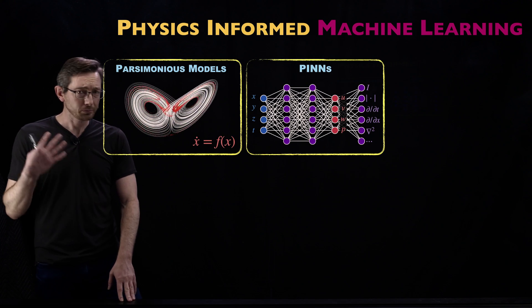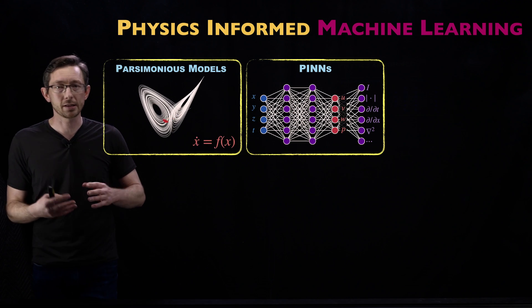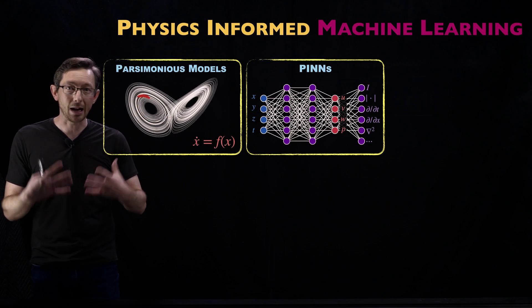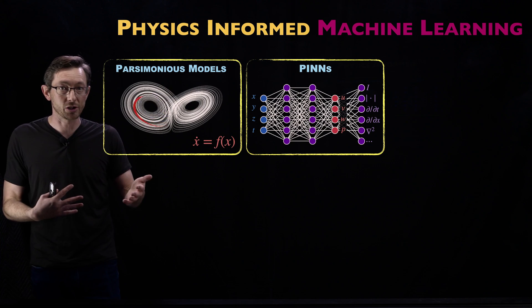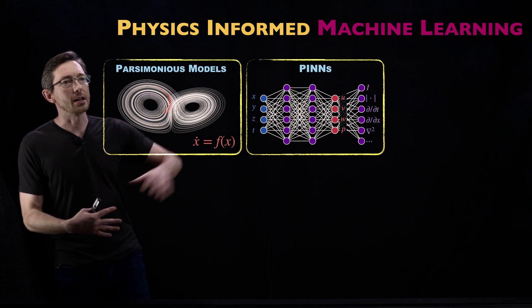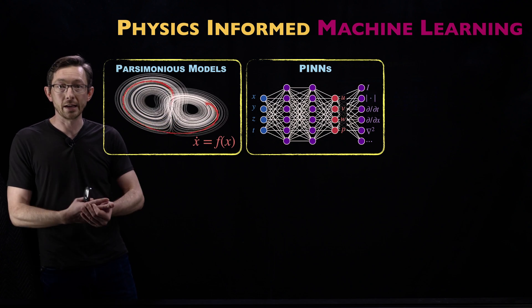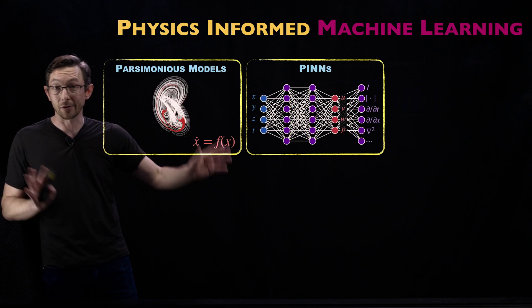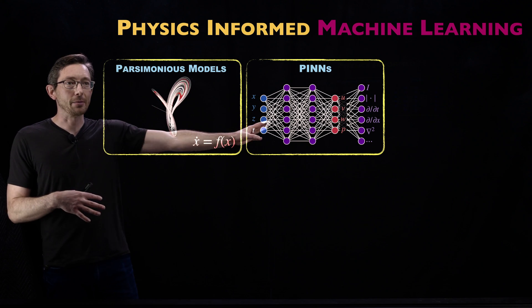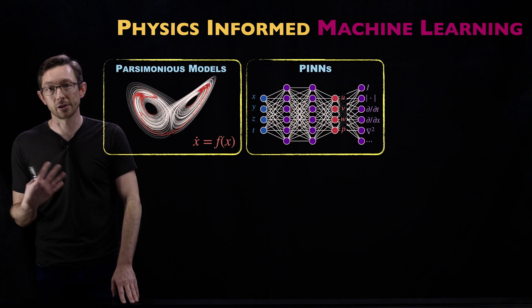Another module we're going to talk about are PINNs, physics-informed neural networks. This is one of the most popular and widely used types of physics-informed machine learning algorithm. We're going to talk about how these are designed, how to train them, when they work, when they don't. There's a ton of different types of PINNs.